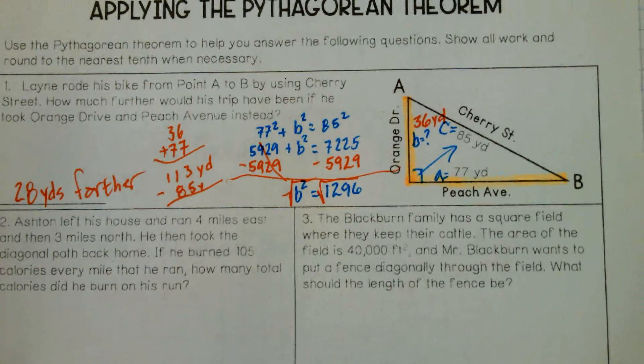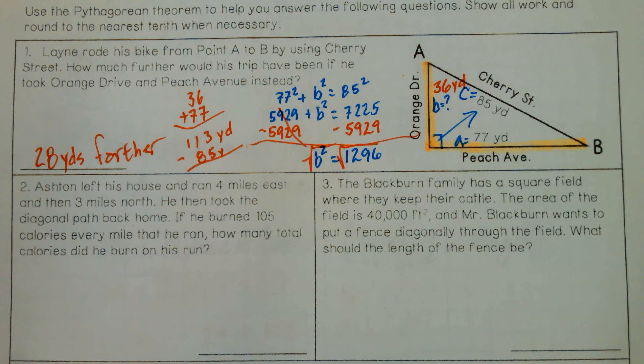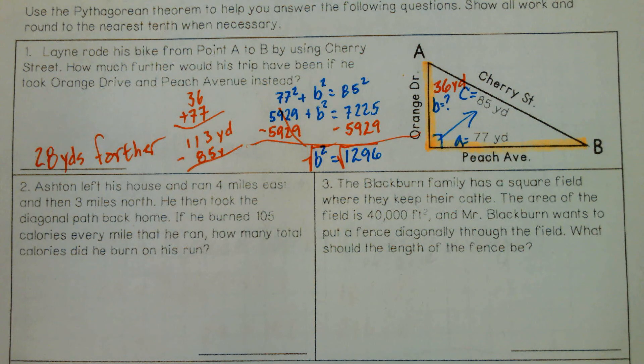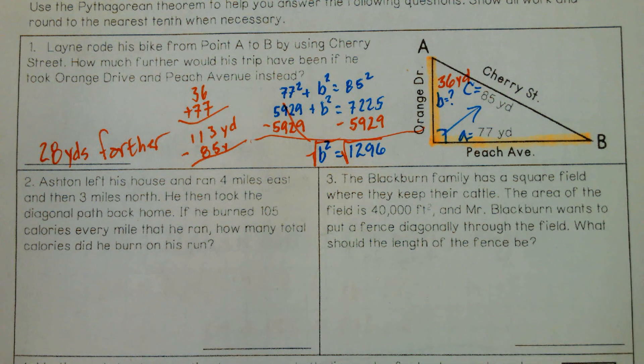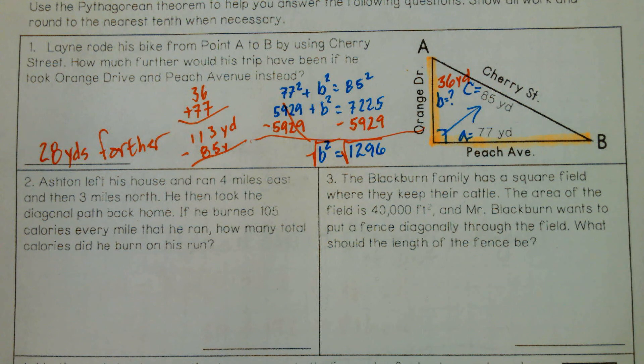So some of the questions, not all of them, but a good number of them, will be these multi-step questions where finding a length using the Pythagorean theorem would just be a part of what you want to do. Okay, let's look at number two. It says Ashton left his house and ran four miles east, and then three miles north, then took the diagonal path back home. So he burns 105 calories every mile he ran, how many total calories did he burn?